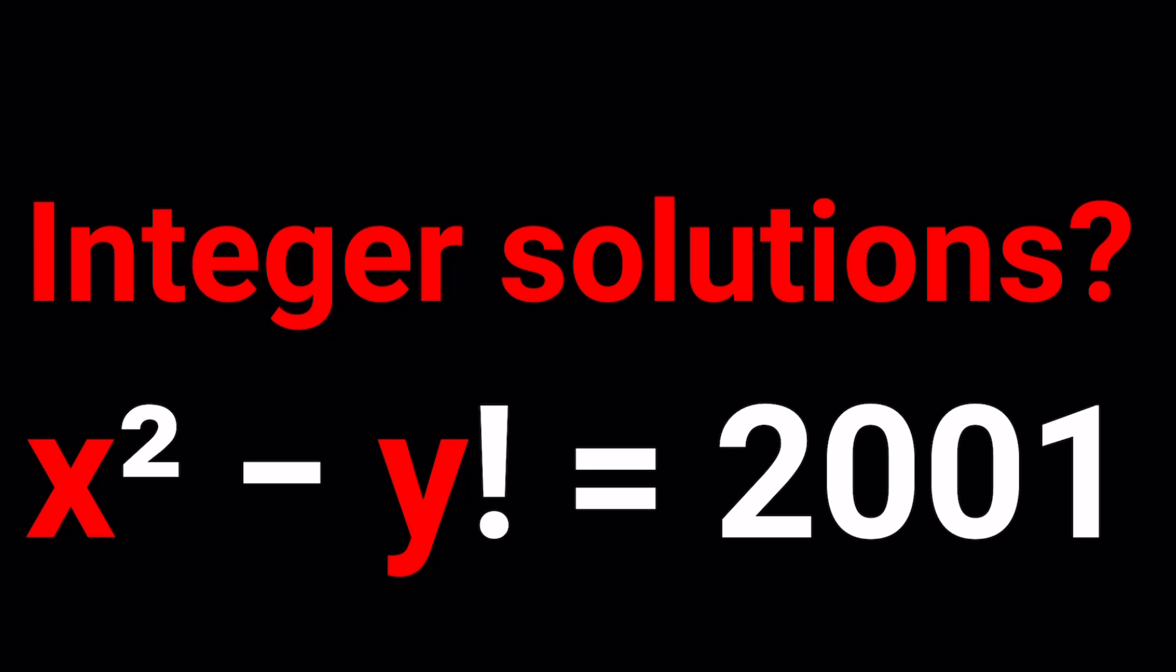One of the best tools for solving these equations, which are called Diophantine equations - by the way, I made a video, you can check that out - but one of the main strategies is using modular arithmetic. Meaning that, in a particular mod, like mod 5 or mod 3, if this equation has no solutions, then in general, it does not have any solutions either.